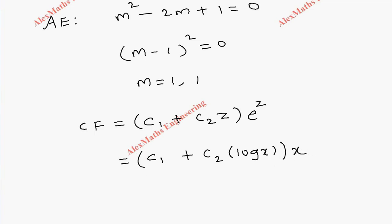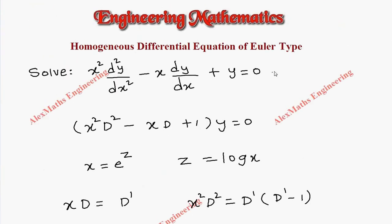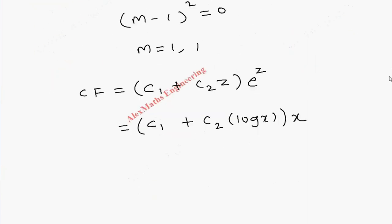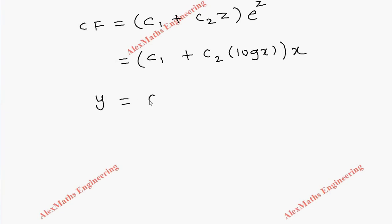The other side of the equation is 0, so we don't have the particular integral. Our complete solution is CF + PI. Since PI is 0, we get complete solution y = (c₁ + c₂·log x)·x.